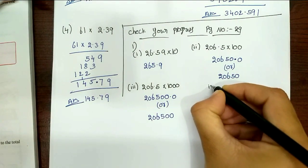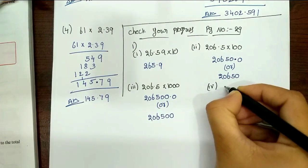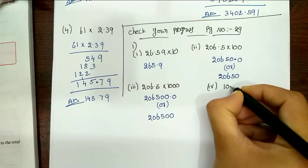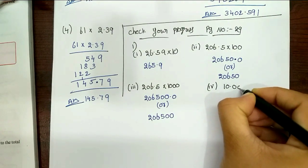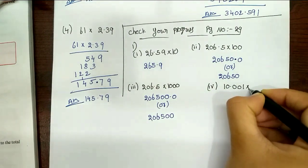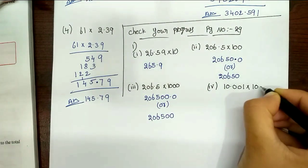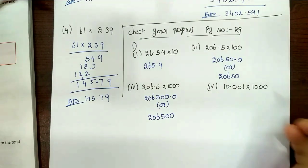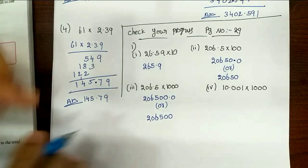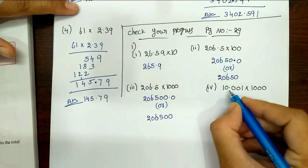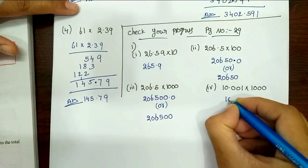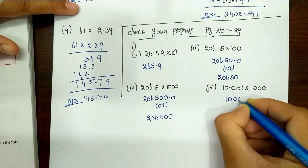Next, fourth one. Fourth one: 10.001 into 1000. Okay? So here we go. Point is 3.